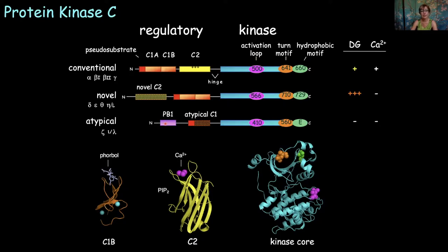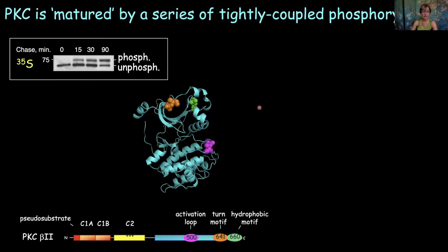They're all activated by a common mechanism: release of an autoinhibitory pseudosubstrate present in all subclasses, which normally occupies the substrate binding cavity of the kinase domain. Upon binding of the correct second messengers or protein partners, it's released from that cavity. The C-terminal half houses the kinase domain, modified by phosphorylation at three highly conserved positions. This phosphorylation happens shortly after biosynthesis, and we monitor it in pulse-chase experiments because there's a very nice electrophoretic mobility shift. We find that PKC gets processed by phosphorylation with a half-time of approximately 30 minutes — it's slow.